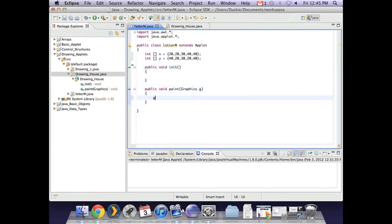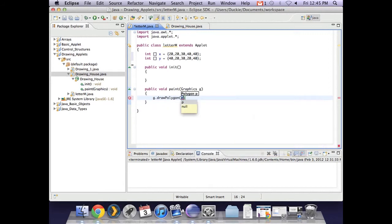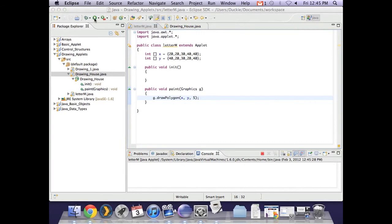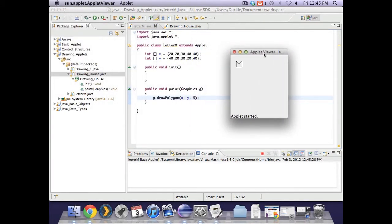Then in paint, we used g.drawPolygon. And then we had to give it the array containing all the x points, the variable containing all the y points, and then we need to tell it how many points there are all up. So if we just run that, let's have a look. And we've got our letter M that's closed in at the bottom.